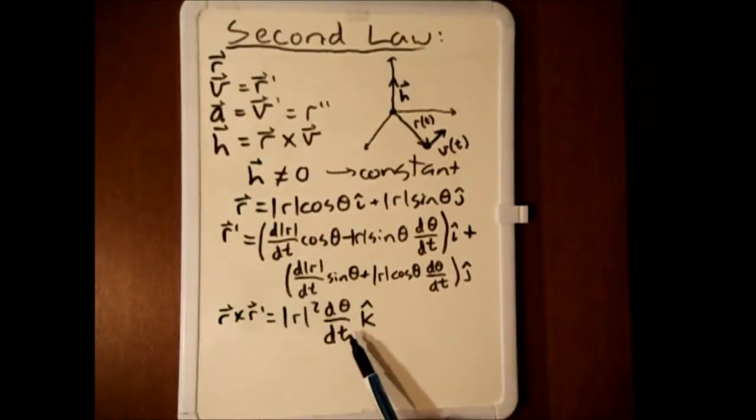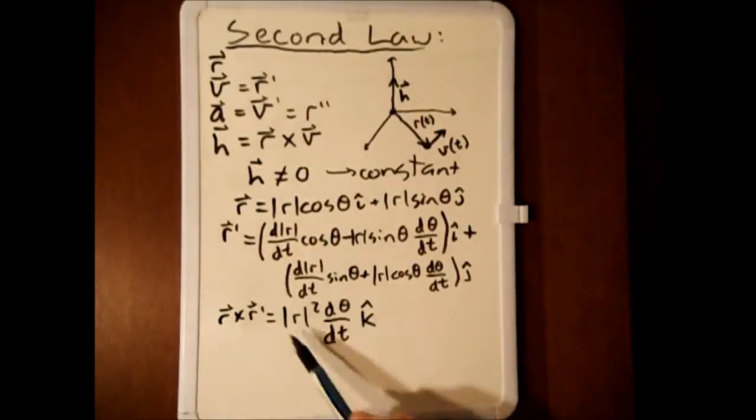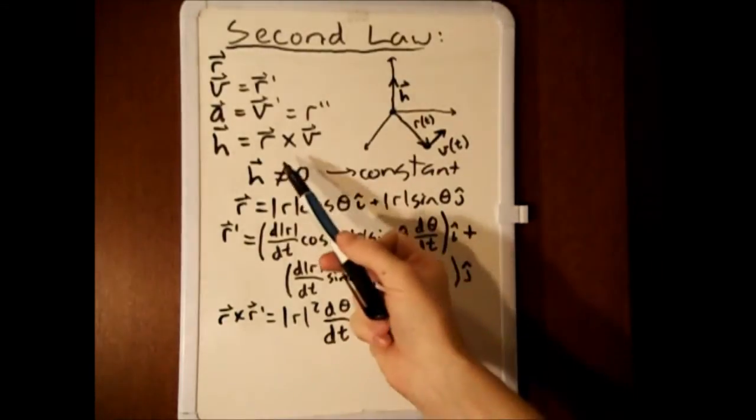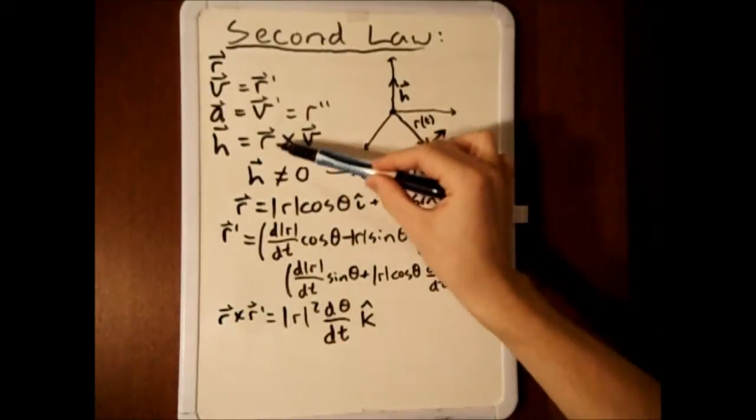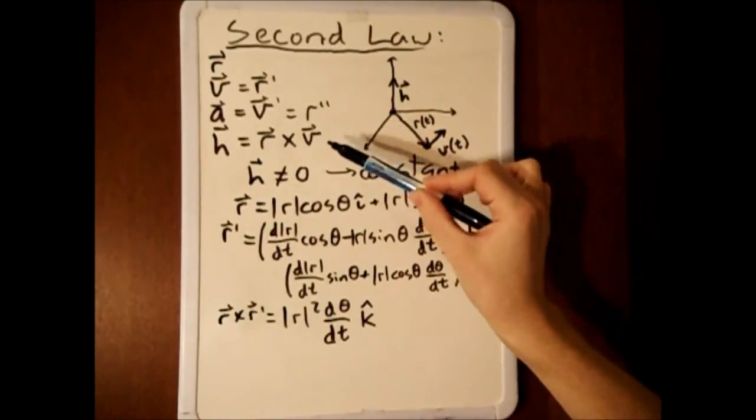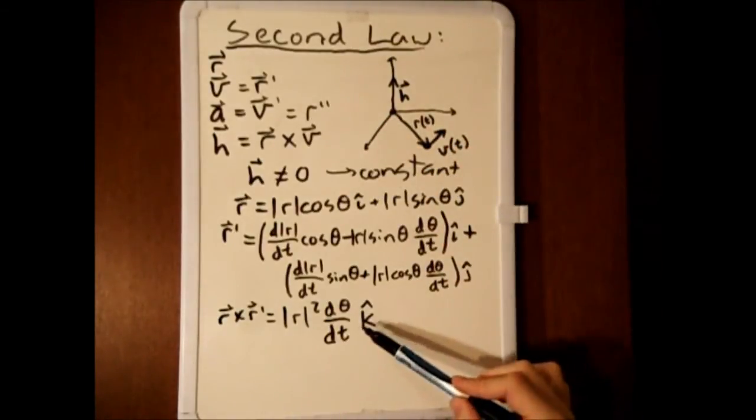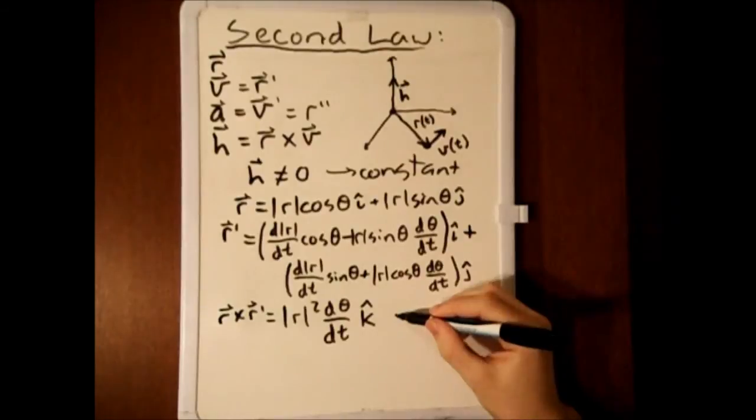This we know to be constant because we know that h is constant, and this r cross r prime, or r cross v, is a non-zero constant vector. Good to know.